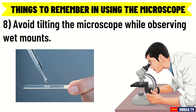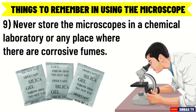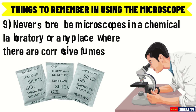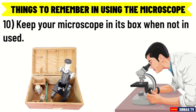Avoid tilting the microscope while observing wet mounts. Water might flow into the mechanical parts of the microscope causing them to rust. Select a chair with suitable height so that both forearms can be rested on the table during observation. Number 9: Never store the microscope in a chemical laboratory or any place where there are corrosive fumes. Make sure there are silica gel packs inside microscope boxes or storage cabinets to absorb moisture. Number 10: Keep your microscope in its box when not in use.